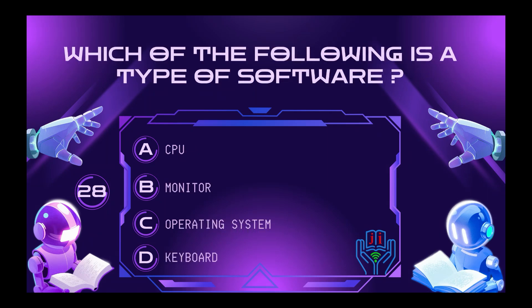Which of the following is a type of software? Answer: Operating System.